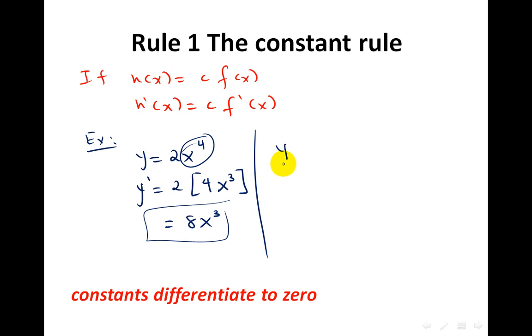Let's have another one. Let's say y equals to 10x. So leave the 10 and differentiate the x. The derivation for the x will be just 1, so it will be 10 times 1, just 10. This will be your answer.